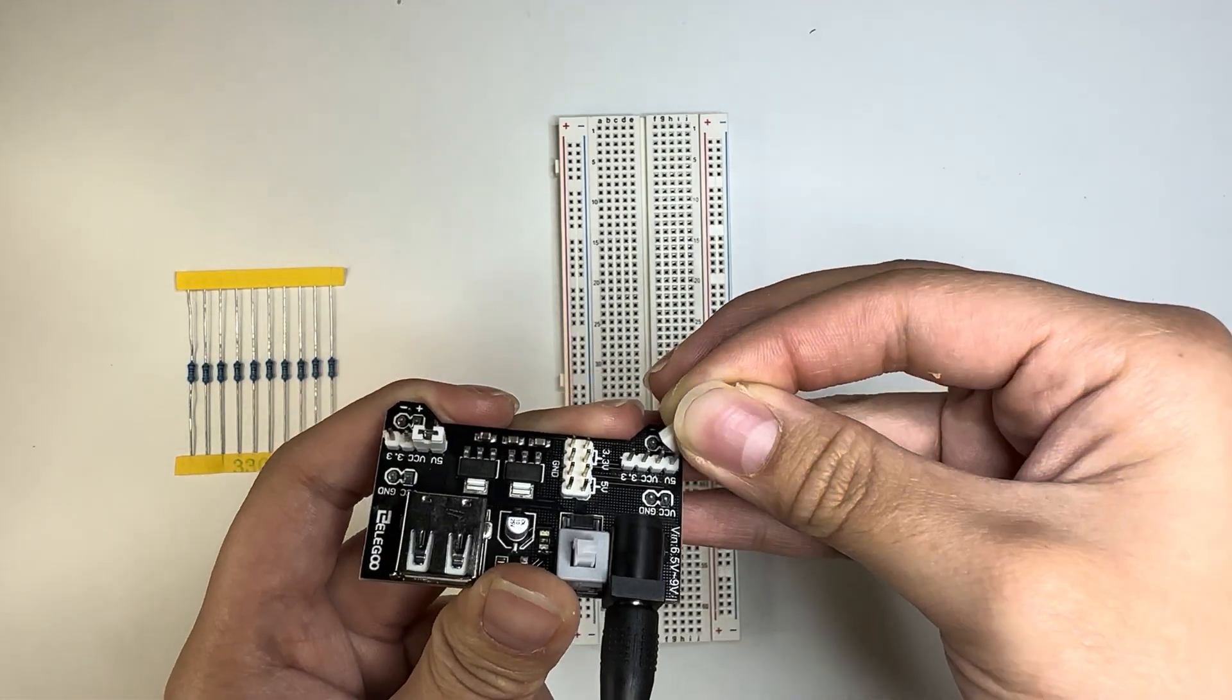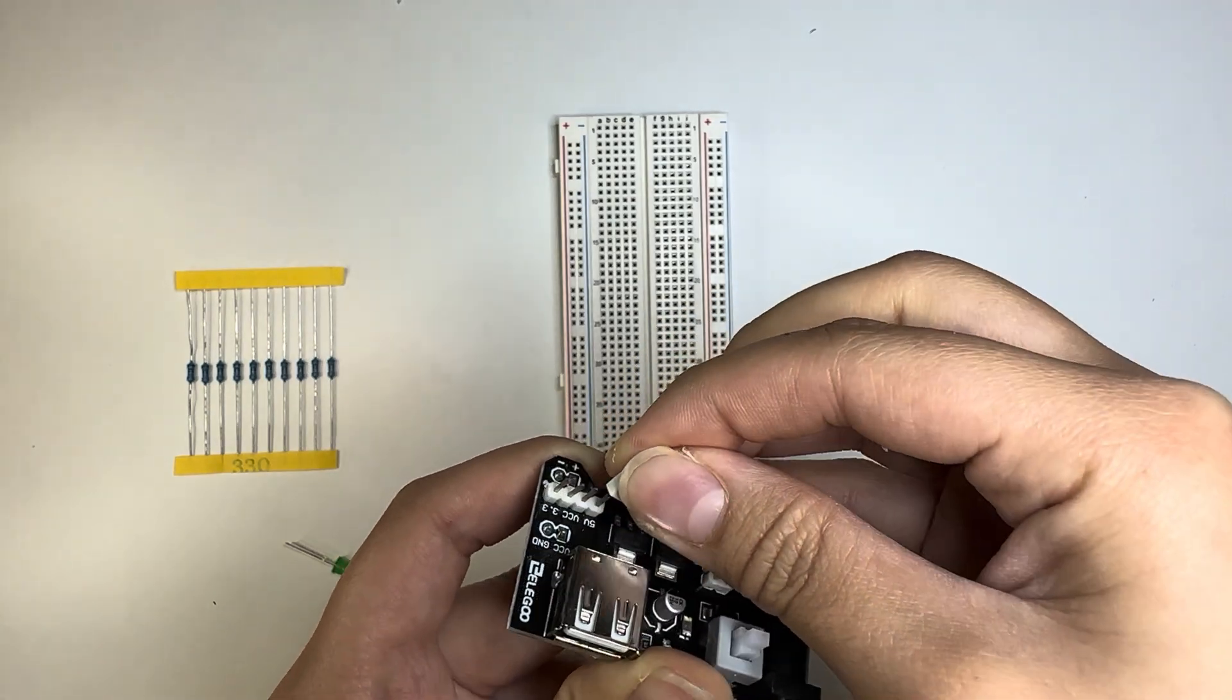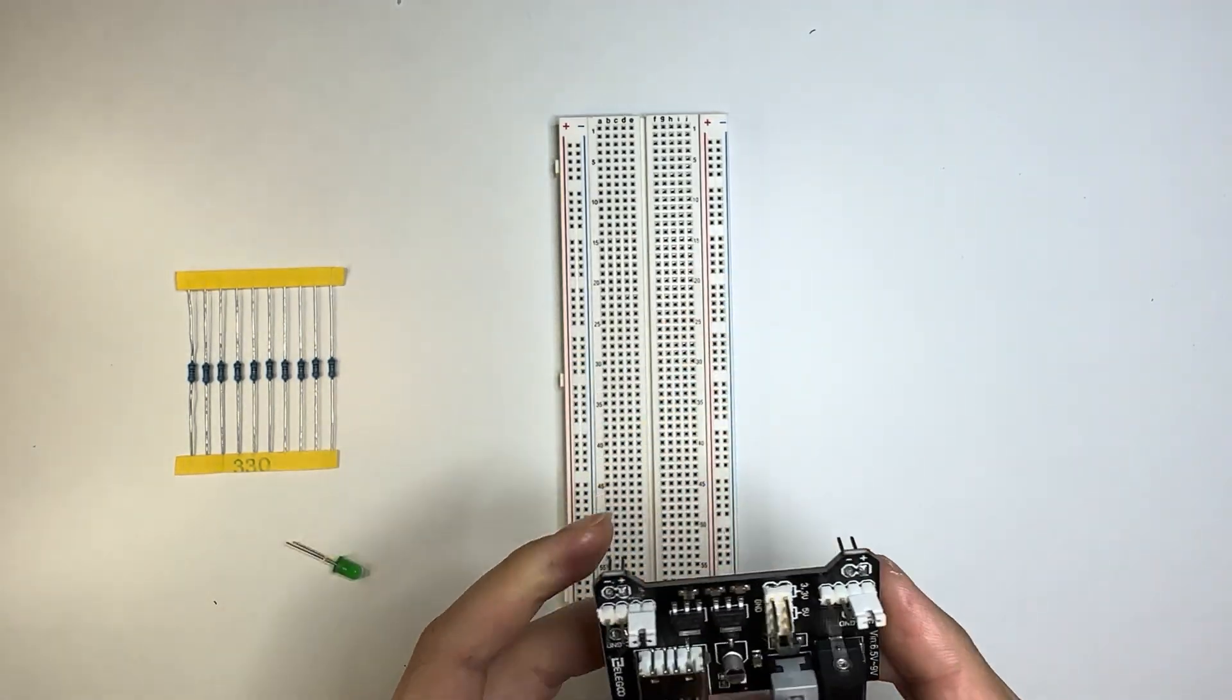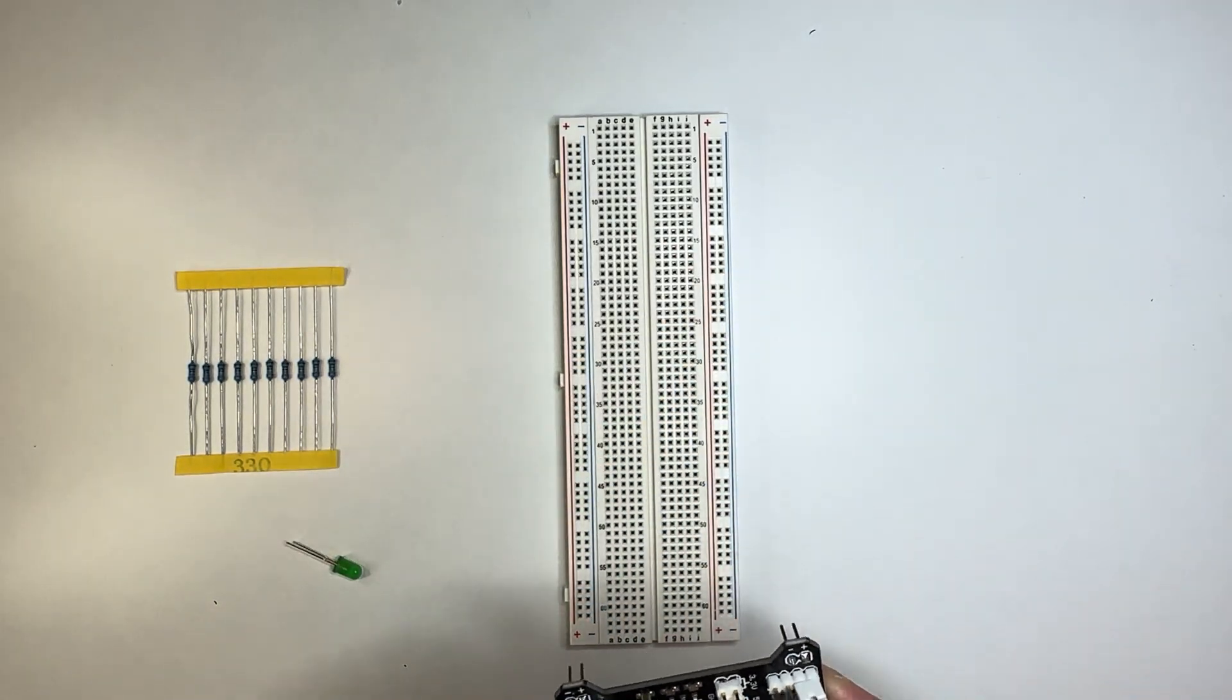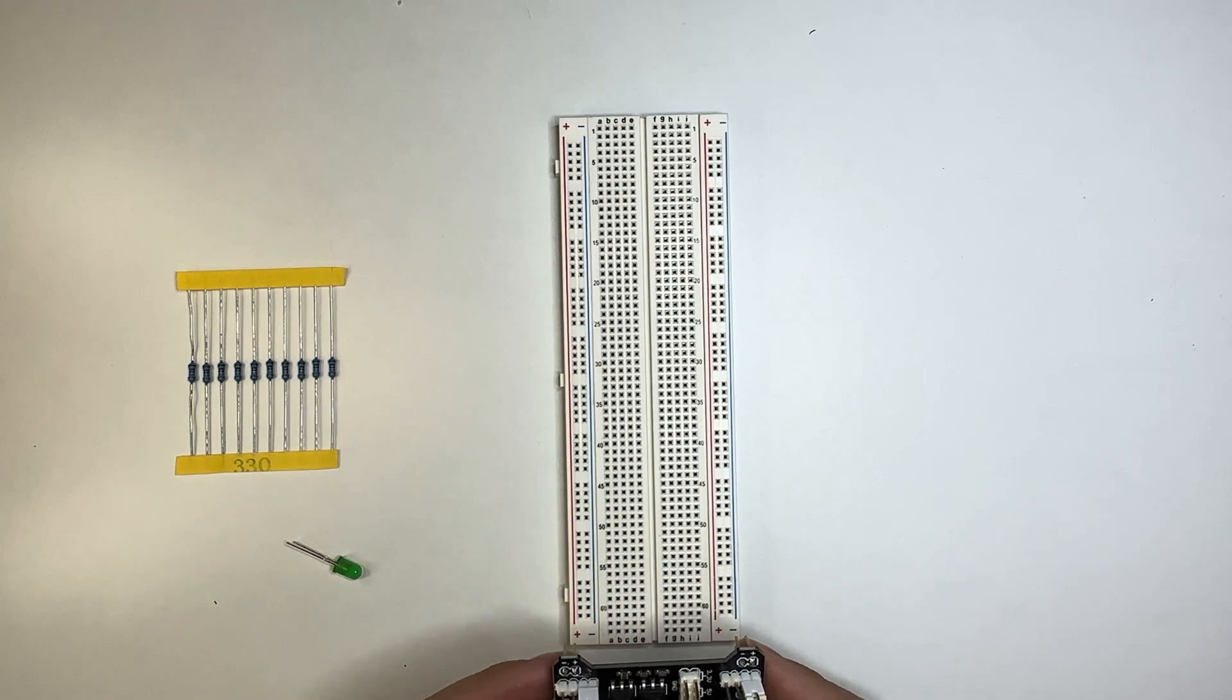So these are jumper cables. So just put it on the 5 volts. This is just so that you know, okay? But it's not important for this application. Now, with the sides, which way do we put it into the breadboard?